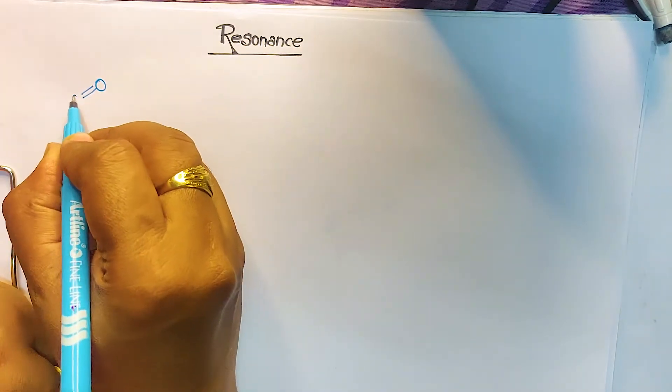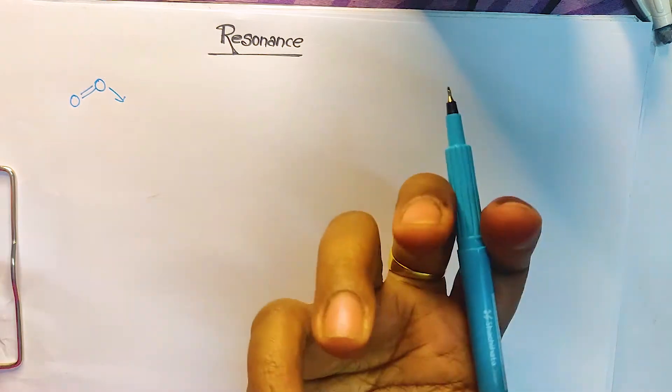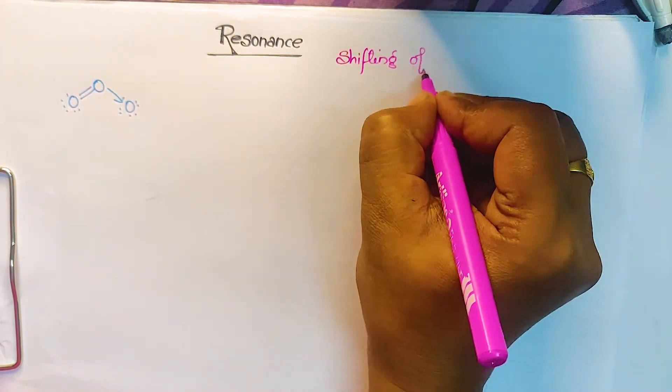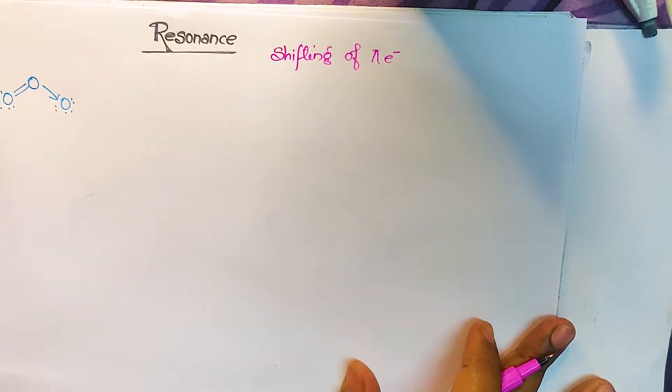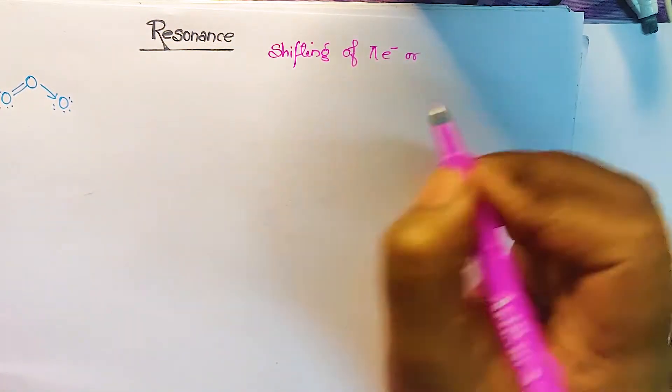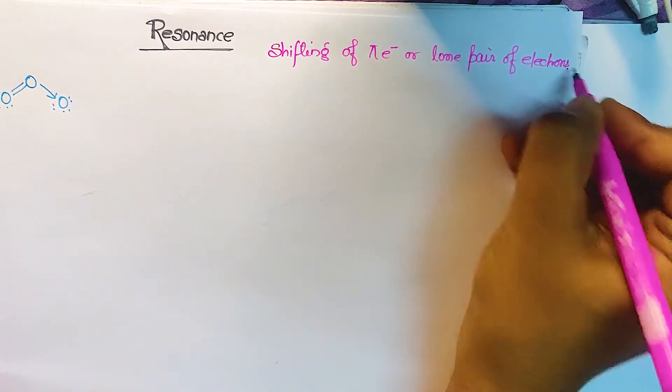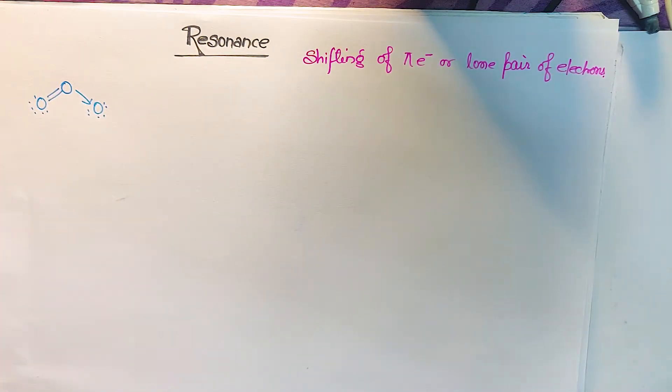Let's get started with the first molecule: ozone. Before drawing the Lewis dot structure of ozone, I want to define resonance. Resonance is simply the shifting of pi electrons, or we can say the shifting of lone pair of electrons. This is the important thing to keep in mind.